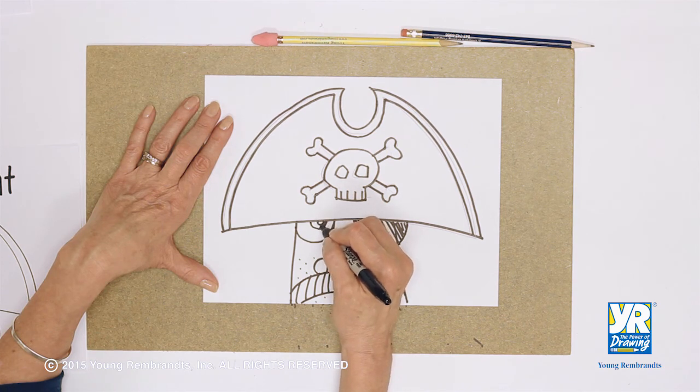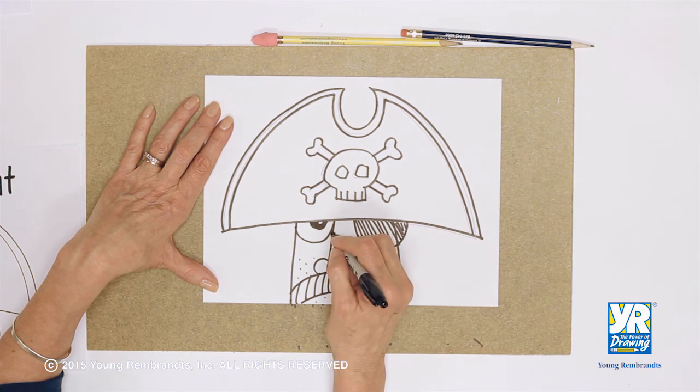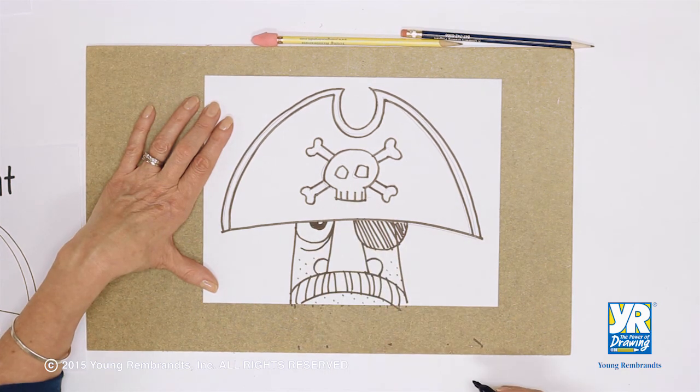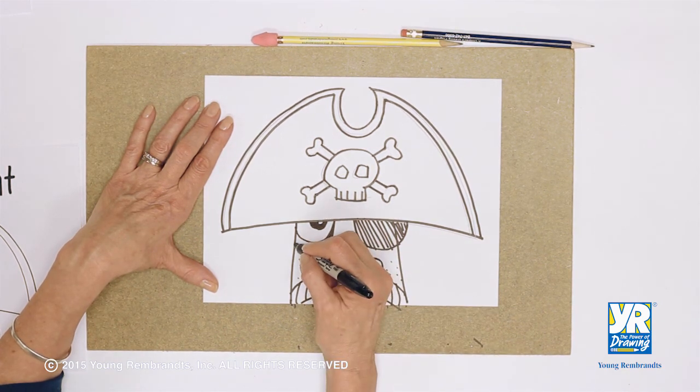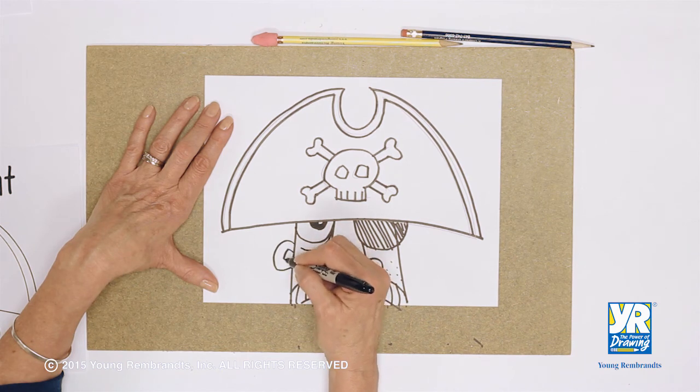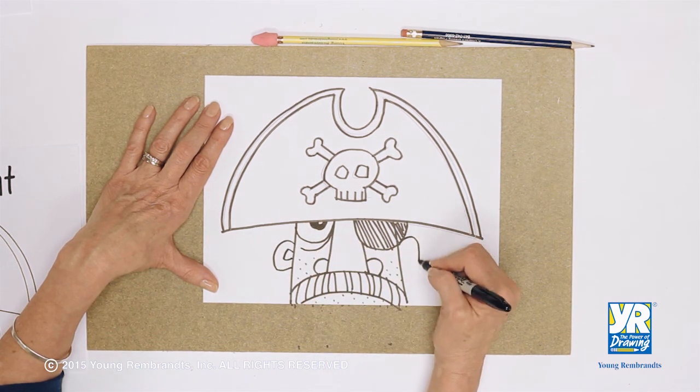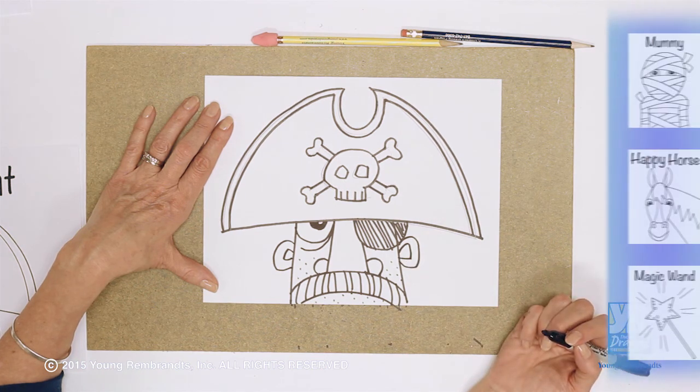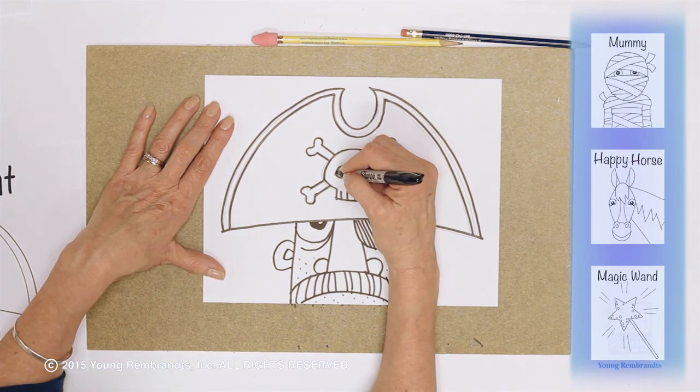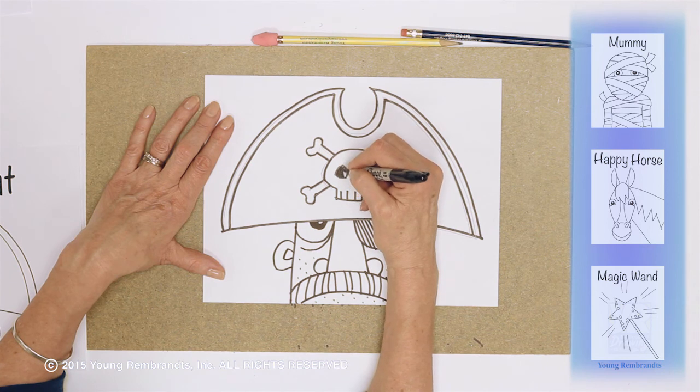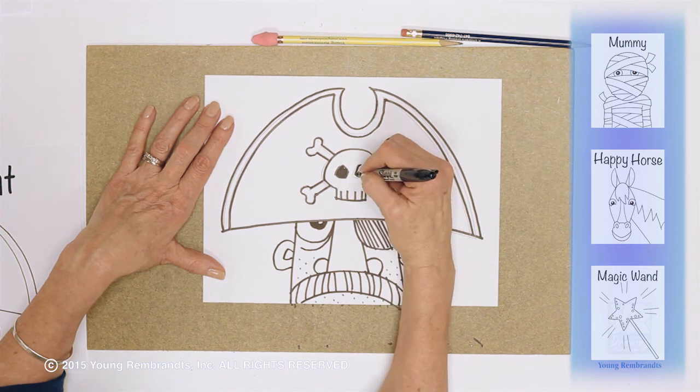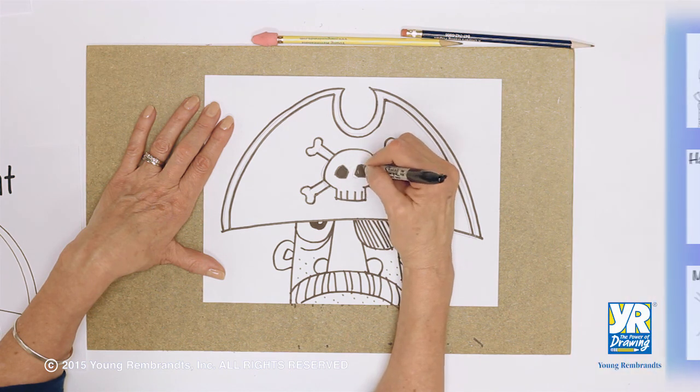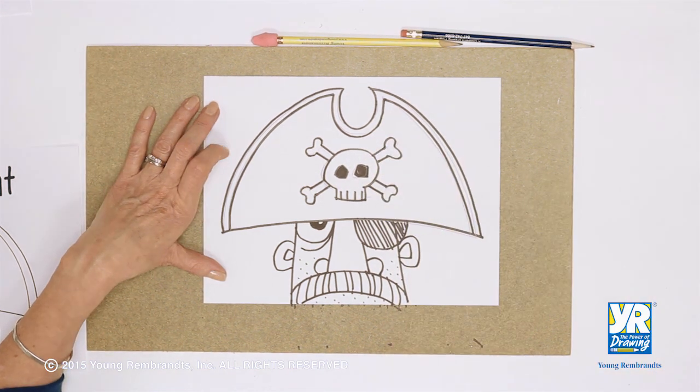He's got a little extra line to make him look a little tired or mean. And let's get his ear in here. And there we have our pirate. And if you want, you can also darken in the inside of your eye sockets because it makes him look a little creepier. And there we have our pirate.